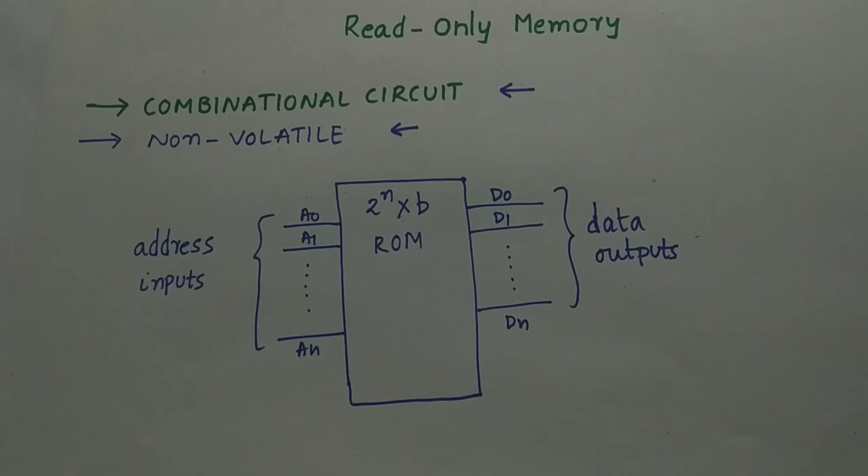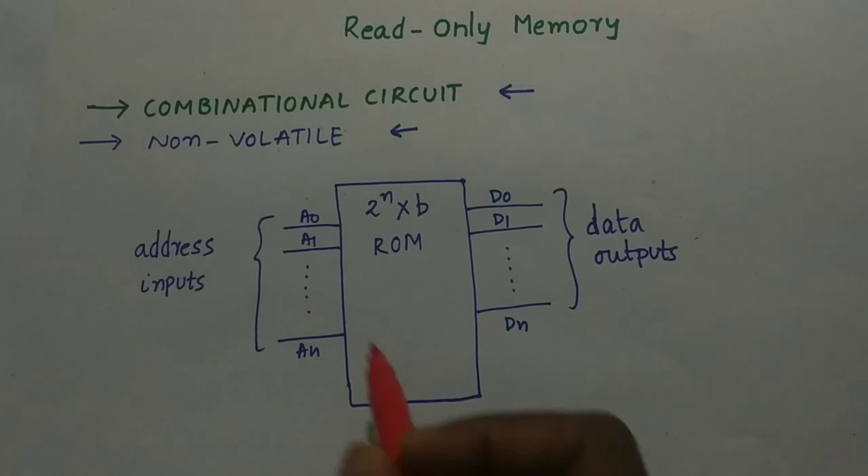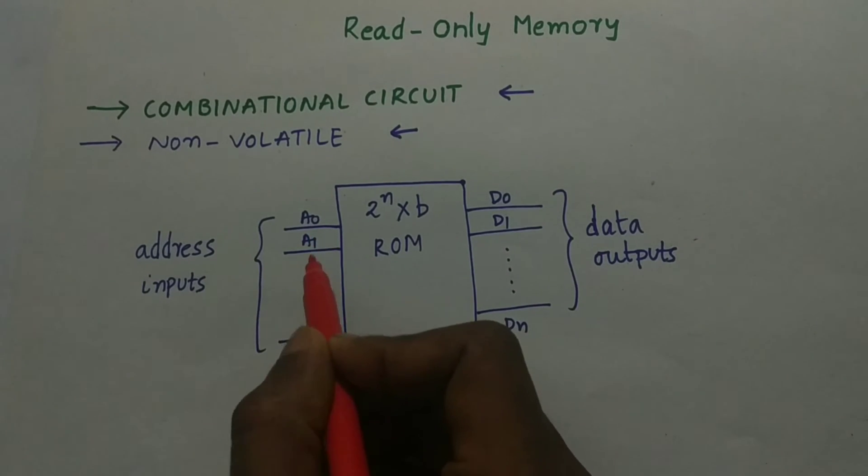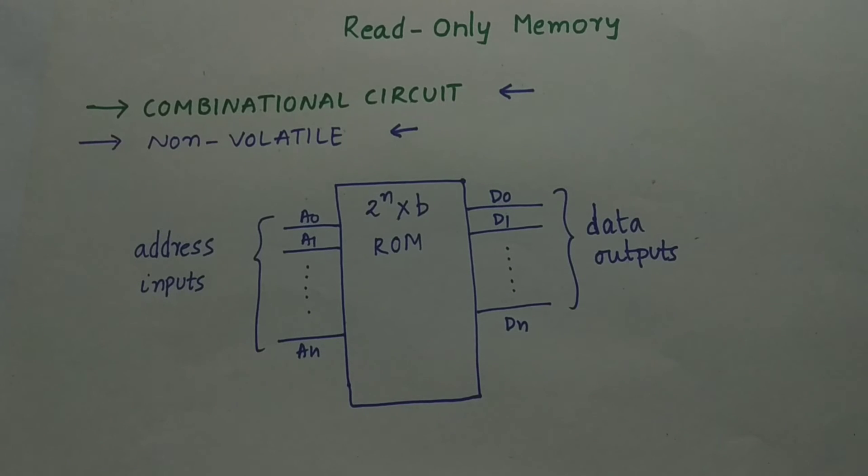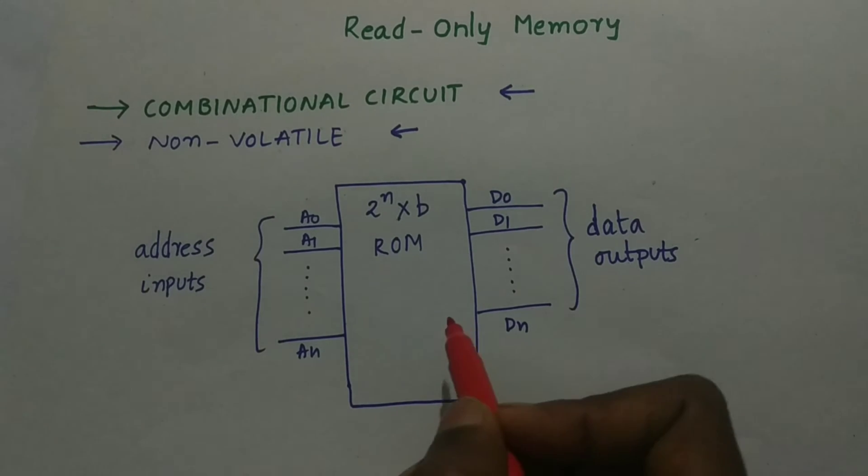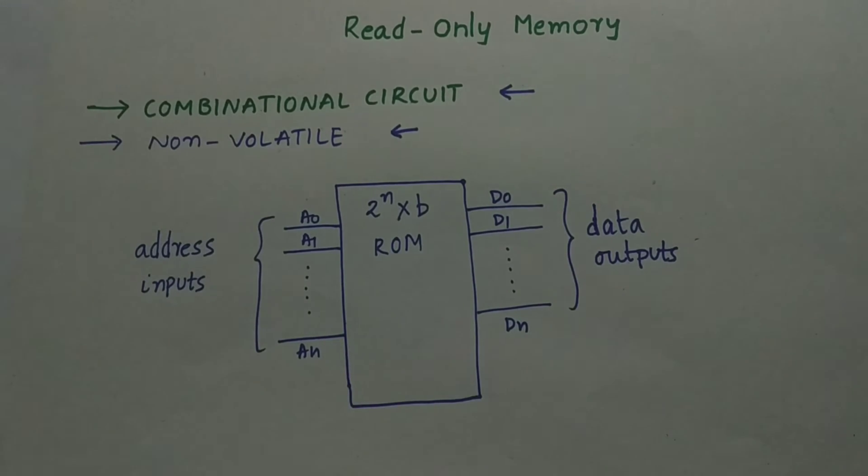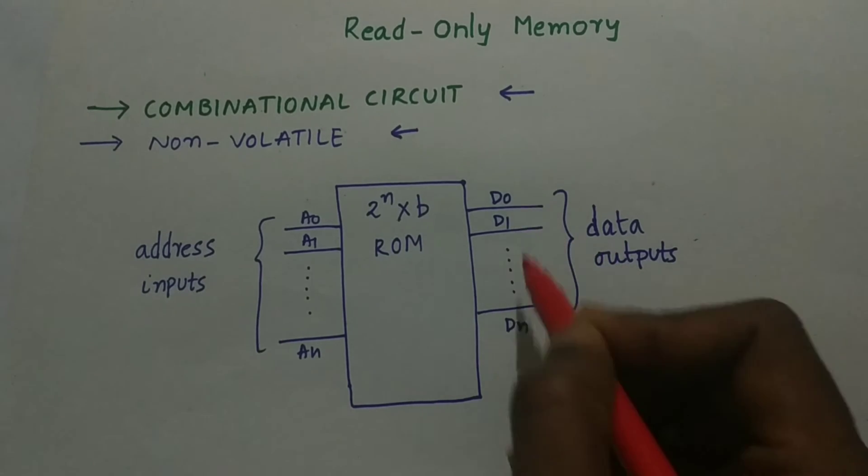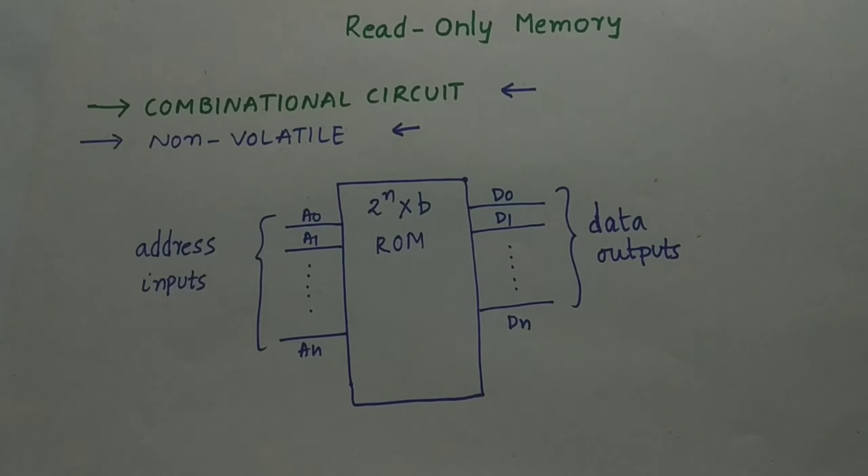So now let us go to the internal structure and how the inputs and outputs will be there for ROM and what is stored inside the ROM. The inputs of the ROM are address inputs. We give the address to our ROM. As you can see over here, A0, A1 and An are the address inputs for the ROM and we will get the data present in that particular location that is D0, D1 and Dn. So that is the outputs for our ROM.